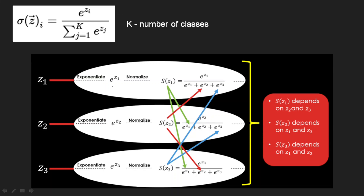If you observe this, every output of the Softmax depends on all the other nodes. When calculating the Softmax of Z1 (the first node), that calculation depends on the values of Z2 and Z3 as well. The same interdependency applies for all other output nodes.